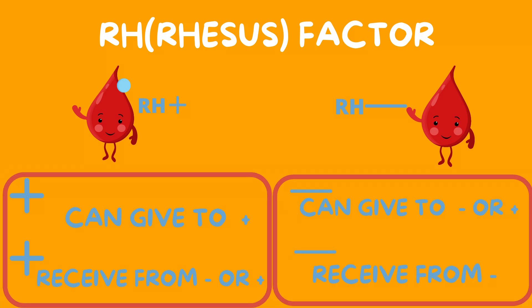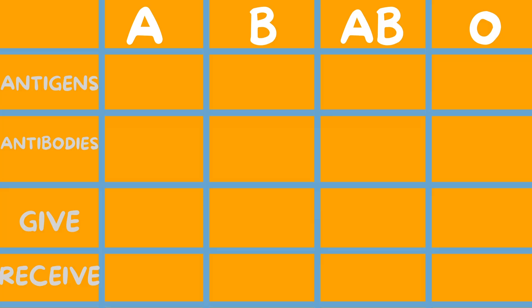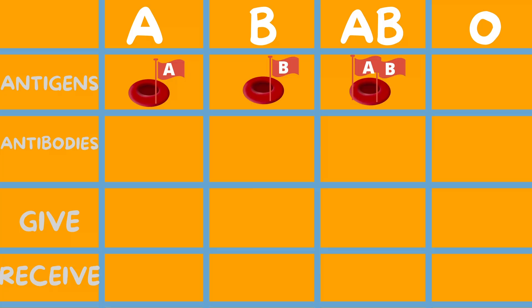I've made a quick chart as a review guide — you can screenshot it and use it for your studies. At the top I have the blood types A, B, AB, and O, and to the left I have their antigens, their antibodies, what they're able to give, and what they're able to receive. Starting with antigens: blood type A has A antigens, blood type B has B antigens, blood type AB has AB antigens, and blood type O has no antigens at all.